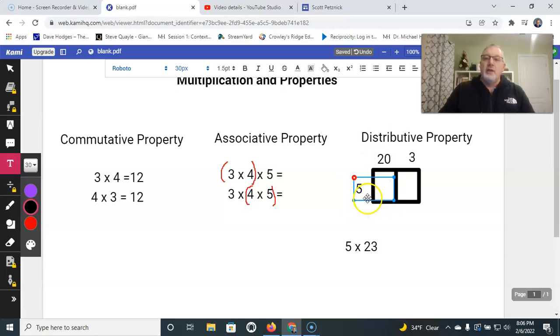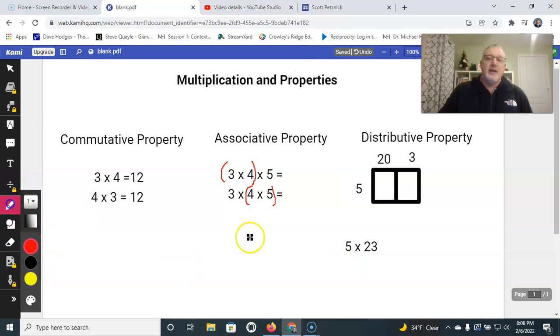And then I have my five down here. So what we're doing here is we're breaking this apart. I'm multiplying the five times the three. And then I'm going to be multiplying the five times the 20. In essence, that's what I'm doing. Five times 20 is 100, and five times three is 15.